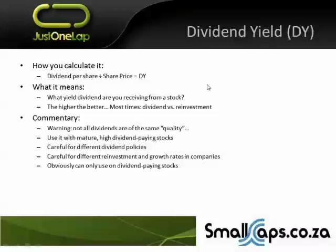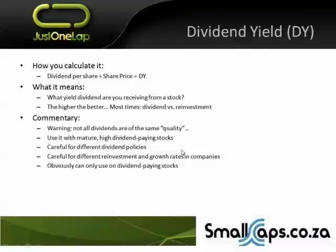Be careful of different dividend policies. Different policies exist in different companies for different reasons, but it tends to revolve around where the company is in its life cycle. As a company starts to become ex-growth, it starts to pay more dividends because it doesn't need to reinvest into operations. So different dividend yields across companies in different life cycles aren't very comparable. Also, dividend yield is limited by the fact that you can only compare companies that actually pay dividends — it only works in dividend-paying stocks.